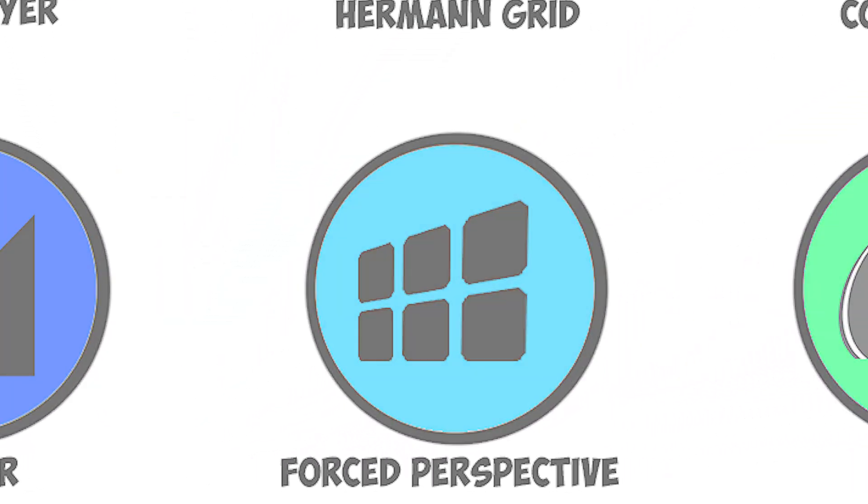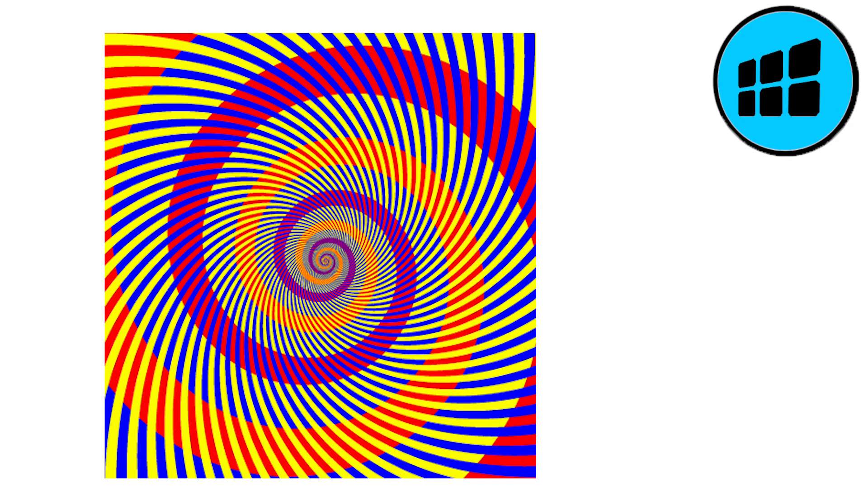Forced perspective. The forced perspective illusion is a technique in illusions used to create the impression that objects are different sizes or distances from each other, when in fact they are the same distance from each other.